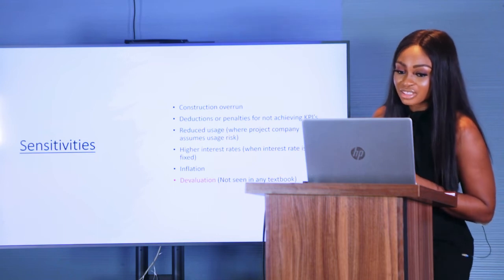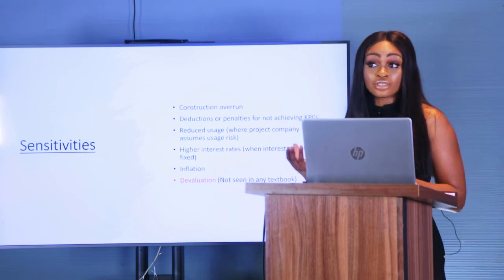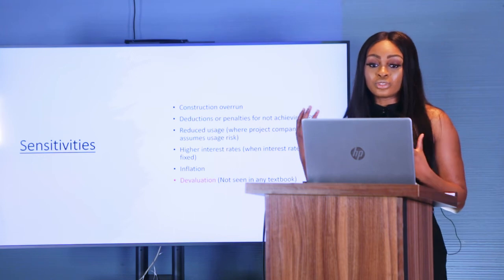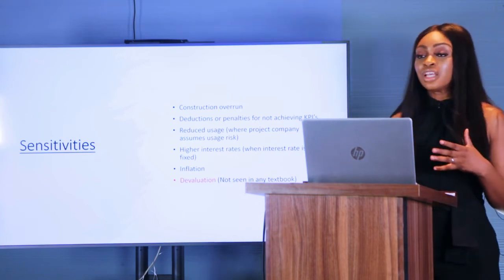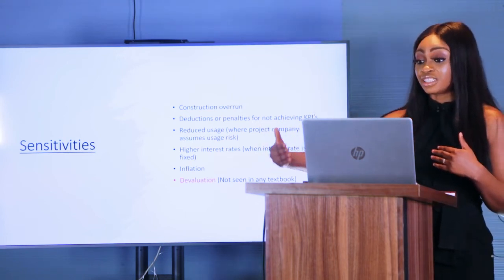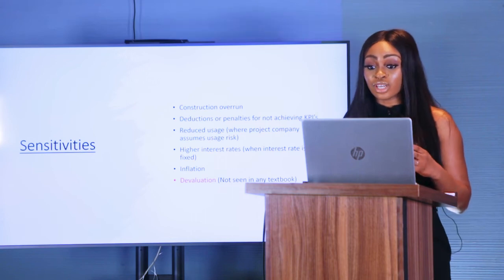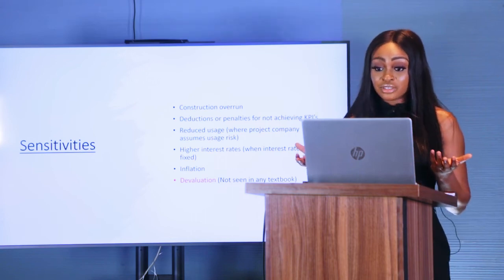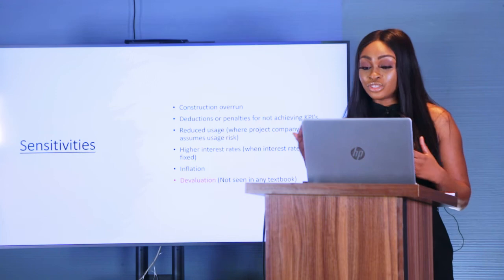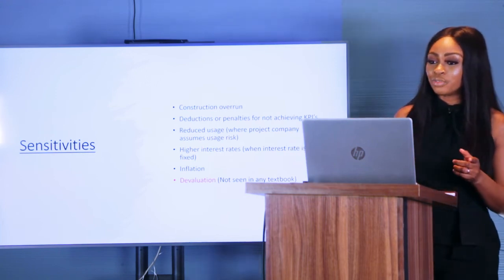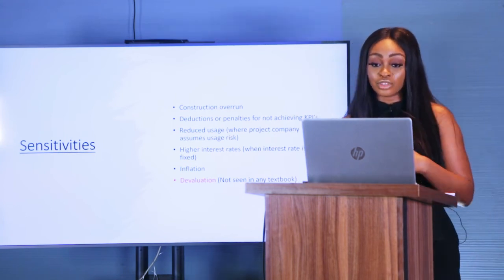Then the sensitivities — things you might want to play with and build flexibility in for. For example, cost of construction overrun: what impact would that have on the project? Deductions and penalties: in PPPs, for instance, the government may set KPIs the company has to hit and may impose penalties, as in the Lesotho case we discussed, for not achieving those KPIs. Reduced usage: where a project company assumes usage risk, what would be the effects of reduced usage? In the Euro Disney case, it was actually reduced spending rather than reduced usage, but the question is the same — what effect does that have on the project?